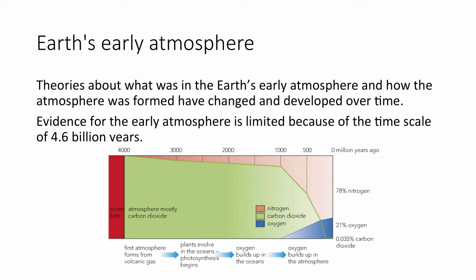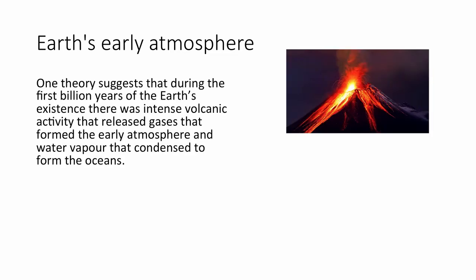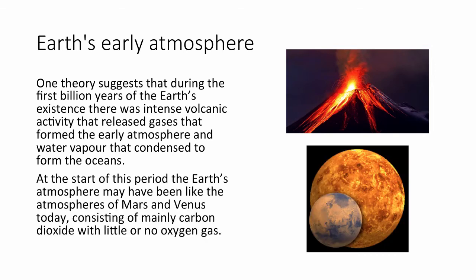One theory suggests that during the first billion years of the Earth's atmosphere, there was intense volcanic activity that released gases forming the early atmosphere, consisting of carbon dioxide, water vapour — which condensed to form the oceans — methane, and ammonia, which eventually reacted with oxygen to form nitrogen and water. At the start of this period, the Earth's atmosphere may have looked like Mars and Venus today, consisting of mainly carbon dioxide and little or no oxygen gas.